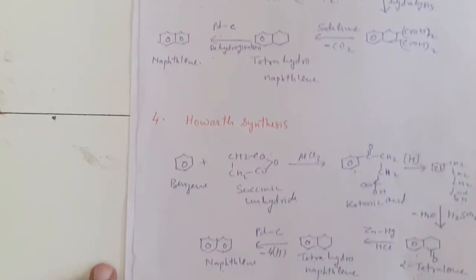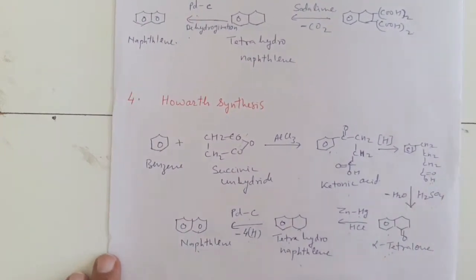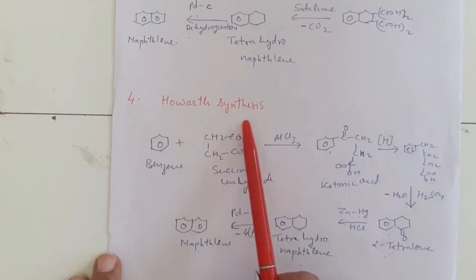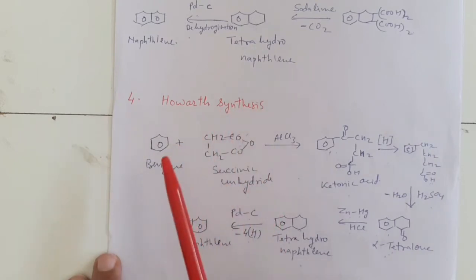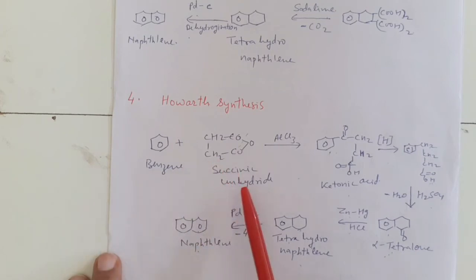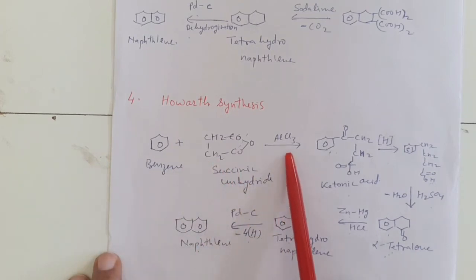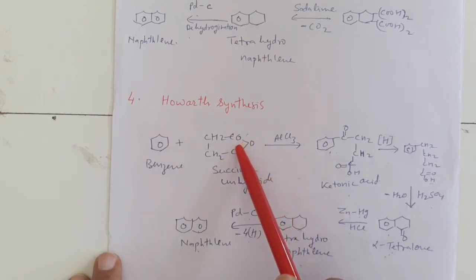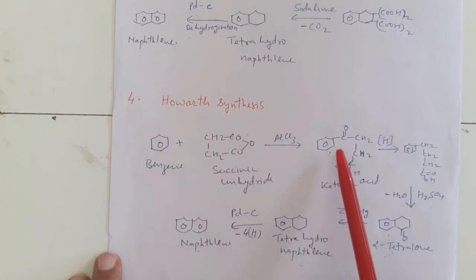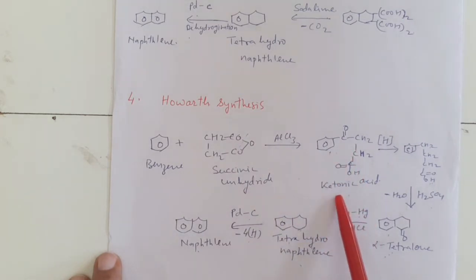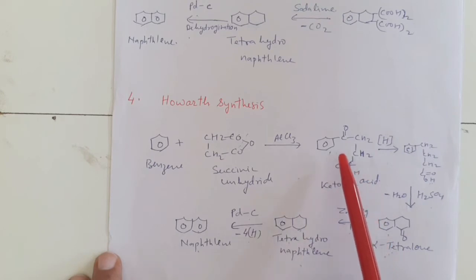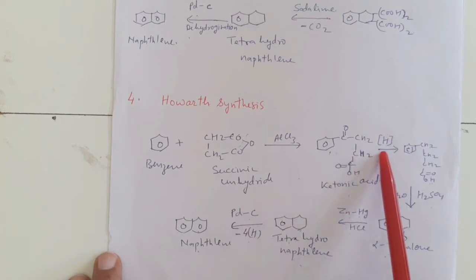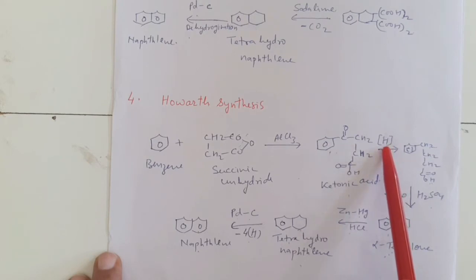The next synthesis is Haworth synthesis. In Haworth synthesis, benzene reacts with succinic anhydride in the presence of aluminium chloride. The bond breaks and we get this ketonic acid. This ketonic acid, on reduction with HCl in the presence of zinc and mercury — that is, Clemmensen reduction — the CO group is reduced.